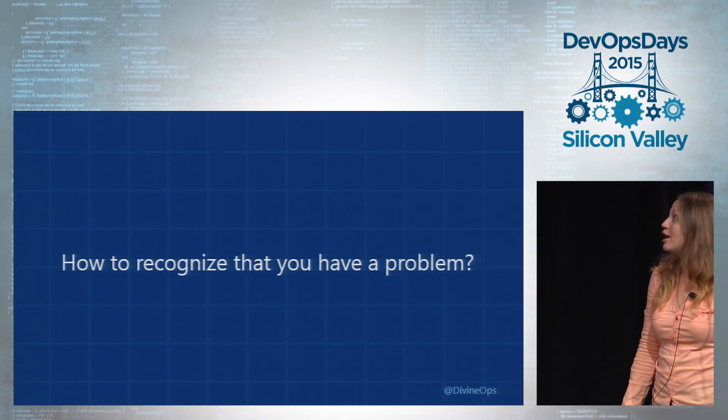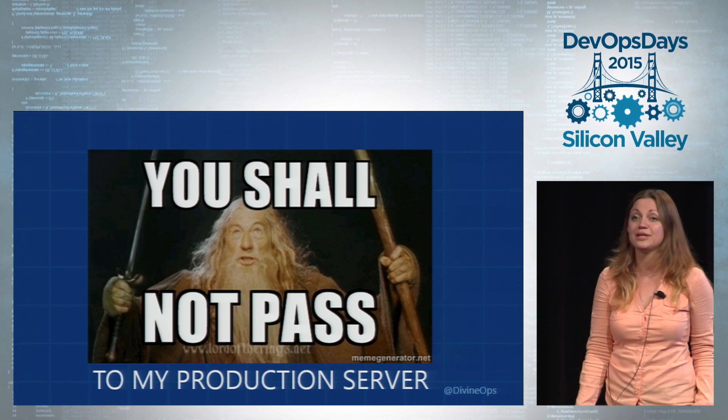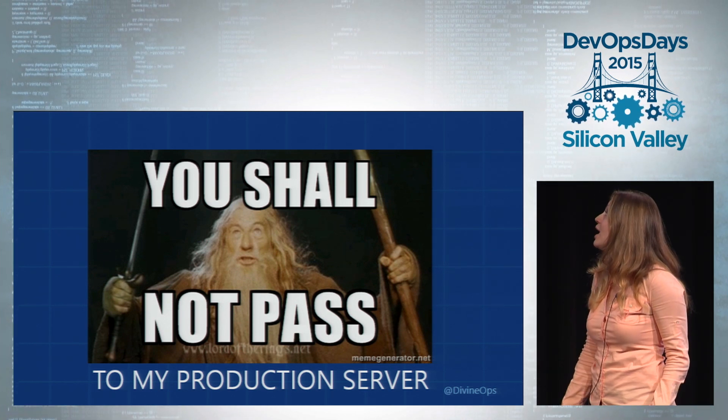So how do you recognize that you have a problem? Number one is the keys to the kingdom problem. You have a single person who is an administrator on a production server, or some part of the system, with sole access to it. I was working with a client a few months ago and while I was there, they had a 10-hour-long production deployment — which they told me was not a problem because they only did it every six months. During that deployment, they spent 45 minutes waiting for someone to finish the drive home because he was the only person who could log into the production server and enable something they needed.